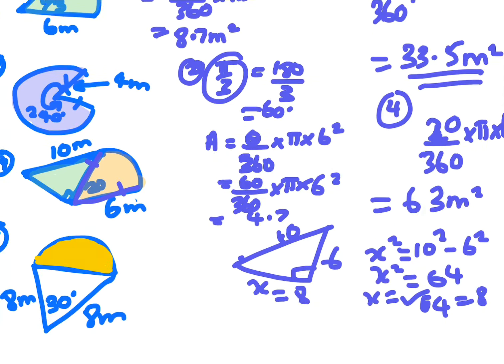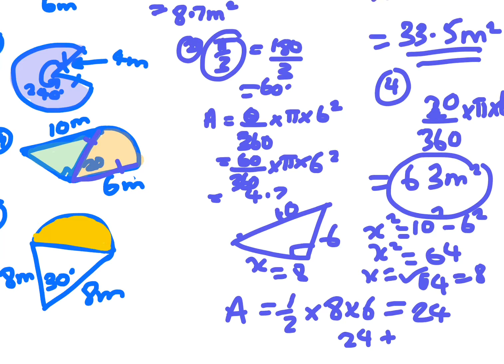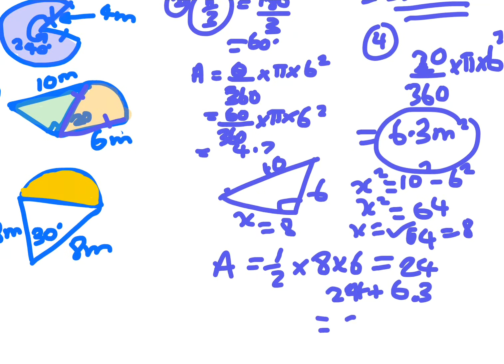So that means that side length there is 8. So when you get the area, it's a half times 8 times 6 which is 24, and then you just add it on to the 6.3 that you found before. So you end up with 30.3 meters squared.